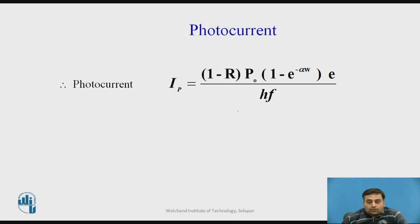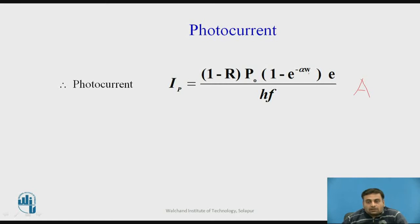The photocurrent is given by the formula: 1 minus R times P0 times 1 minus e raised to minus alpha W, times electron charge e divided by HF. The unit of photocurrent is amperes. We can increase the photocurrent by reducing Fresnel's reflection coefficient, increasing the absorption coefficient alpha, or having a wider width available for absorption of photons.